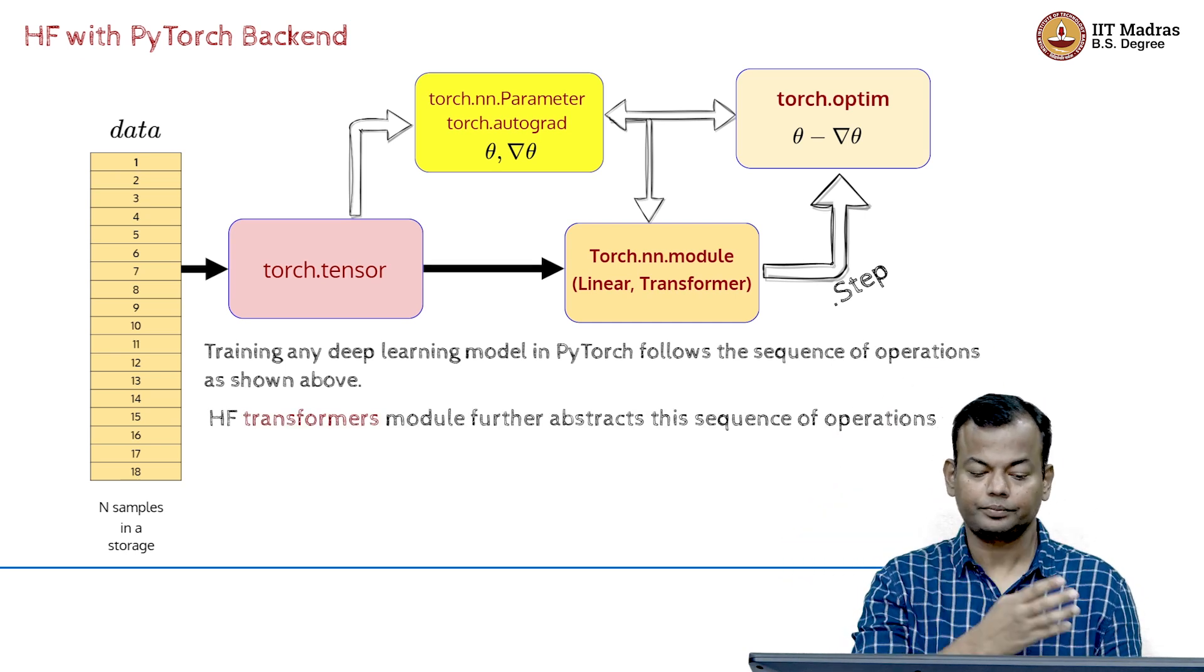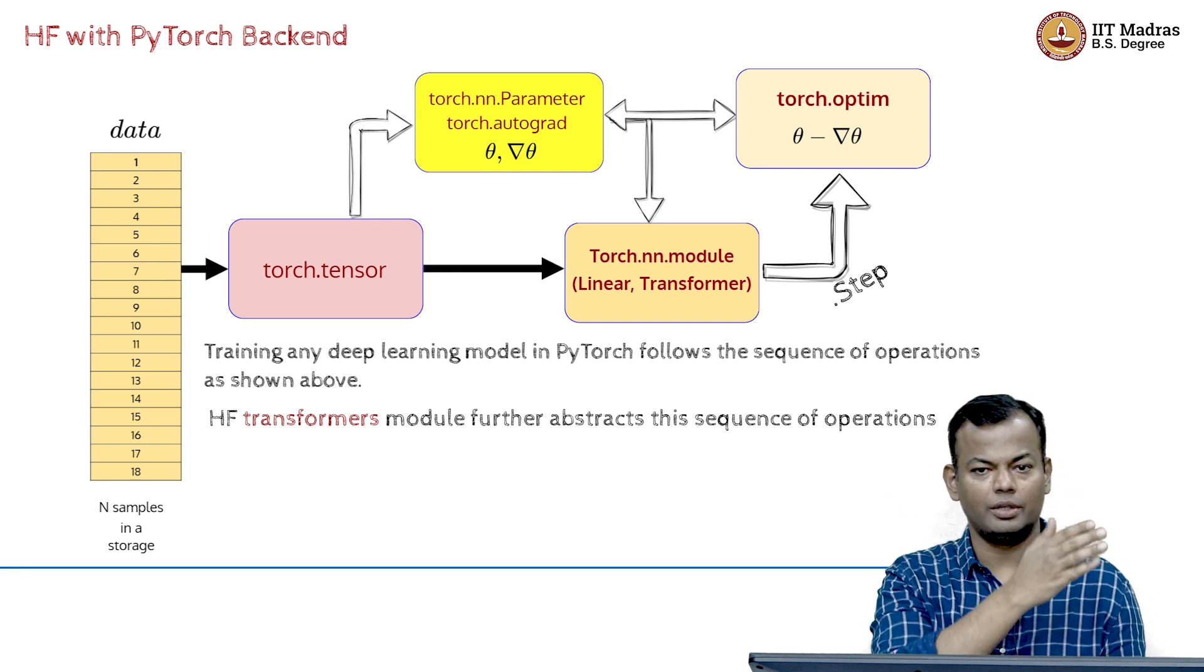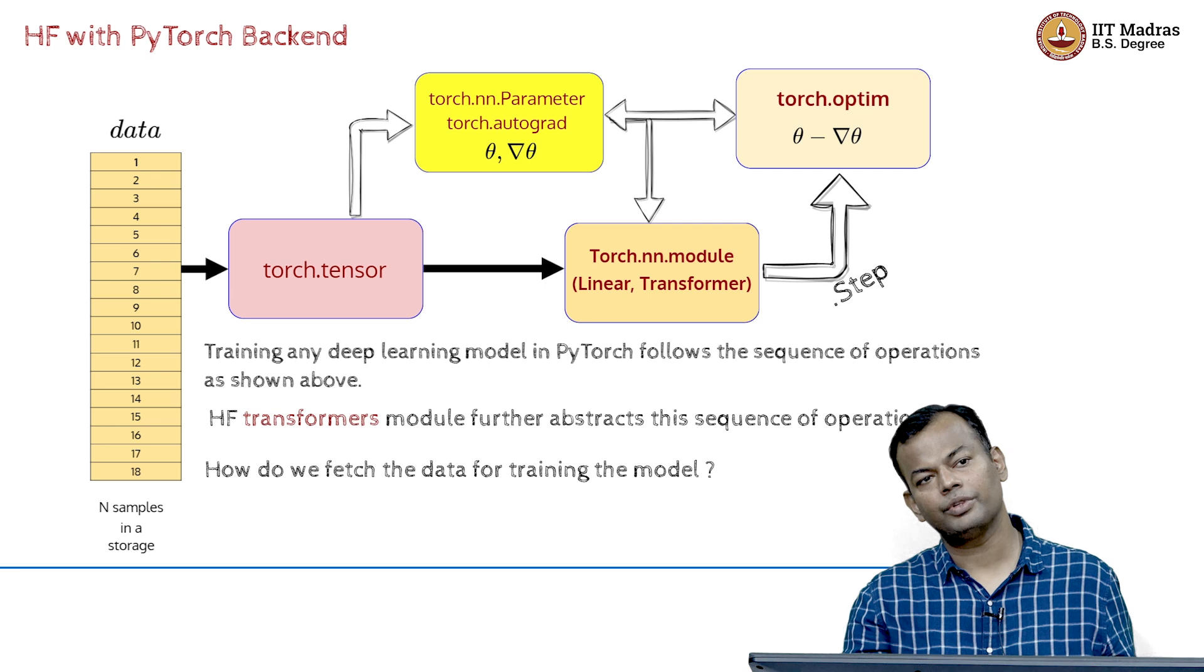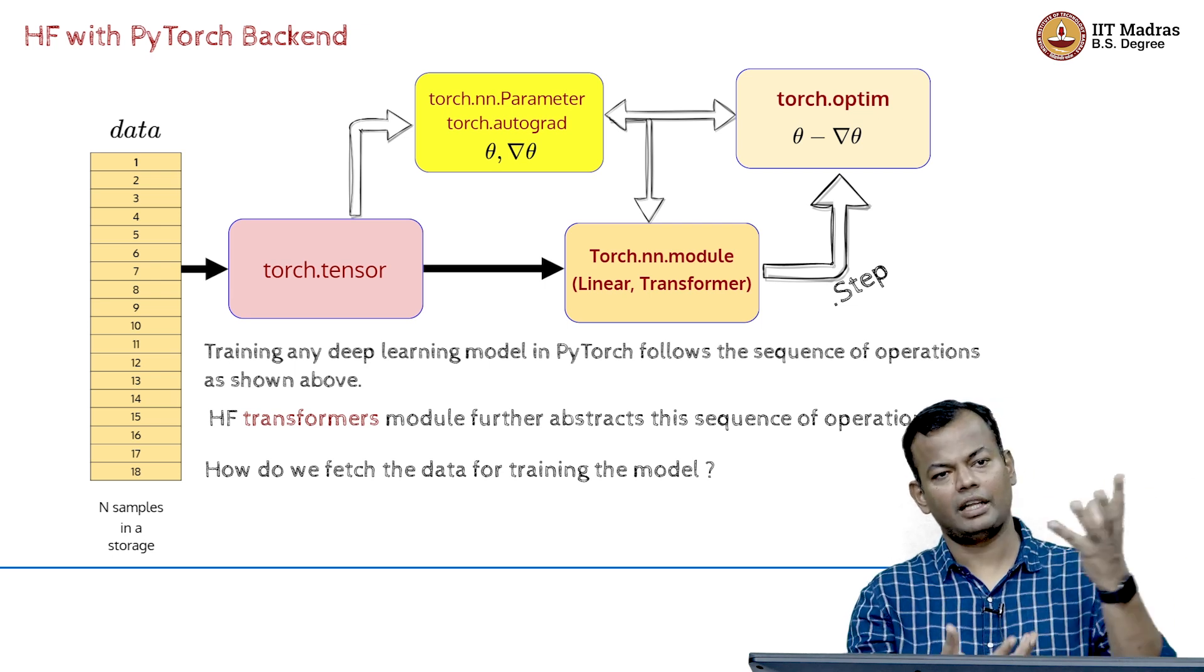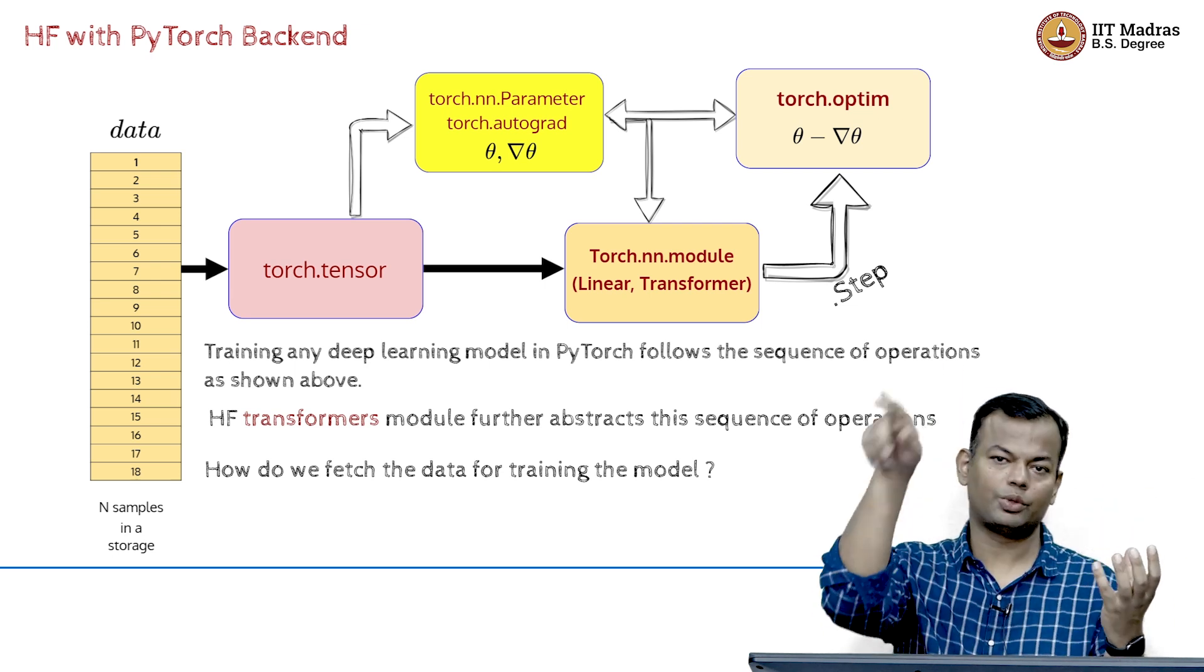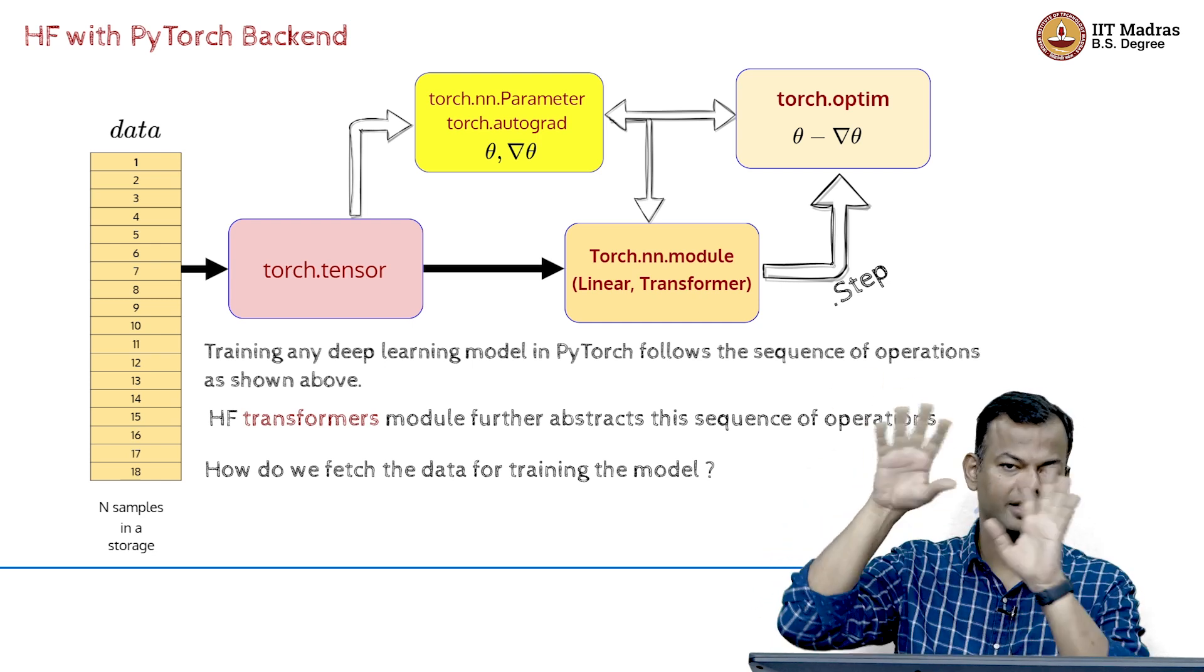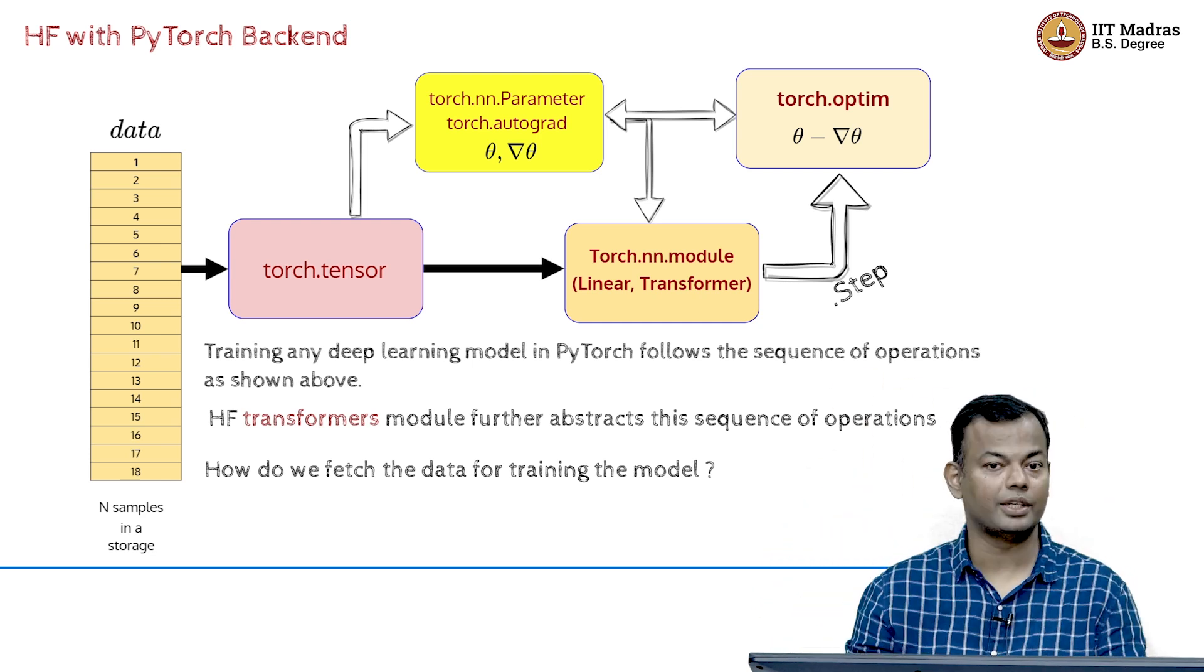The transformers module can actually be used to implement the sequence of operations and then we fetch the data and every data batch we get, we can then pass it through this loop. And for every batch, you are computing the forward pass, the gradients and all of that and keep doing this in a loop.